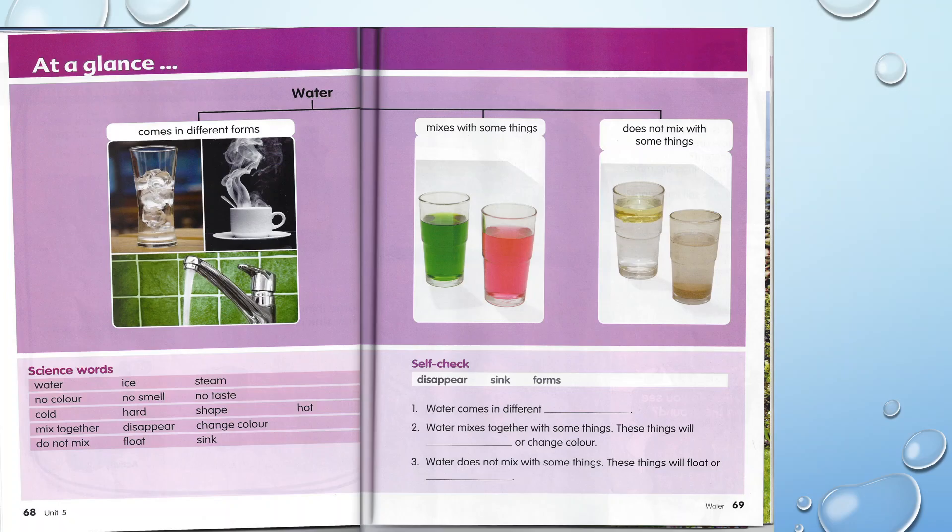Let's continue with the self-check. Here we have to use the words: disappear, sink, or forms. Number one: water comes in different forms. Number two: water mixes together with some things — these things will disappear or change color. Number three: water does not mix with some things — these things will float or sink.